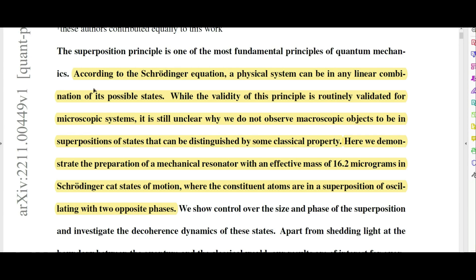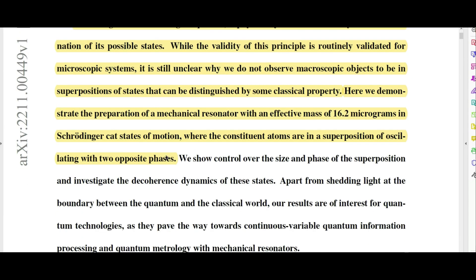According to the Schrödinger equation, a physical system can be in any linear combination of possible states. While the validity of this principle is routinely validated for microscopic systems, it is still unclear why we do not observe macroscopic objects to be in superpositions of states that can be distinguished by some classical property. Here we demonstrate the preparation of a mechanical resonator with an effective mass of 16.2 micrograms in Schrödinger cat states of motion, where the constituent atoms are in a superposition of oscillating with two opposite phases.